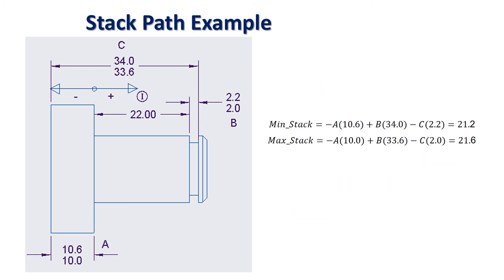Stack path example. In this example, the minimum stack, dimension A is in the minus direction, negative direction, with a value of 10.6 at its max. Plus B. B is the dimension labeled as B, is in the positive direction of the stack path with a maximum value of 34. And C is in the negative direction with a maximum value of 2.2. So there is a gap of 21.2 at its minimum as a minimum stack. And the maximum stack calculated with the dimensions at its lowest values, that is 21.6.